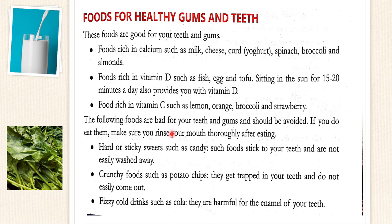Now let's see which foods are bad for our teeth and gums so that we can avoid them. Hard or sticky sweets such as candy stick to our teeth and are not easily washed away. Crunchy foods such as potato chips get trapped in our teeth and do not easily come out. Fizzy cold drinks such as cola are harmful for the enamel of our teeth. As these foods are harmful, we must avoid them — and in case we eat them, make sure we rinse our mouth thoroughly afterwards.